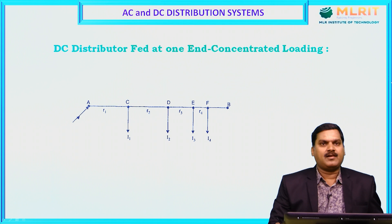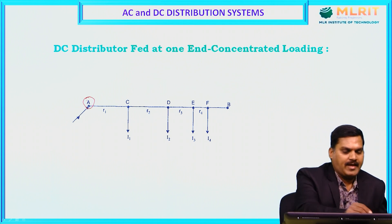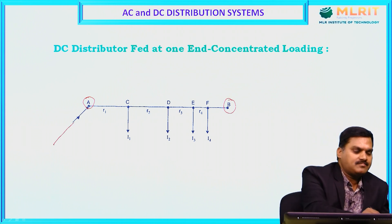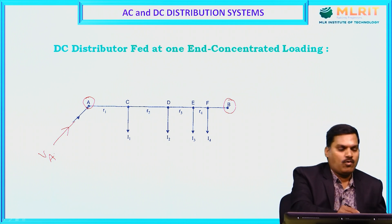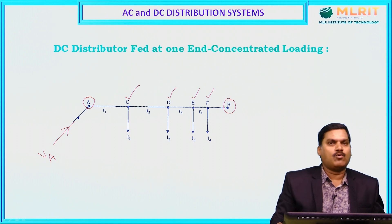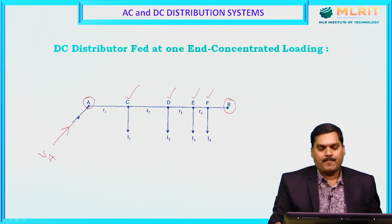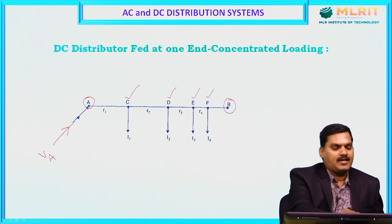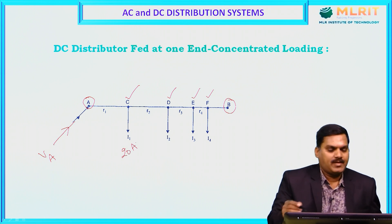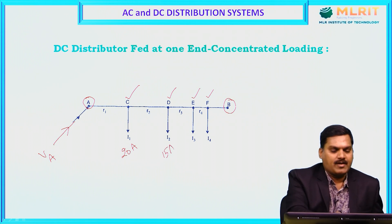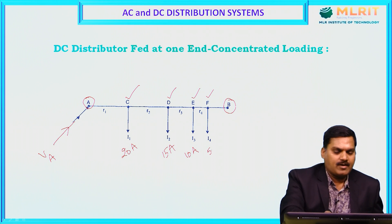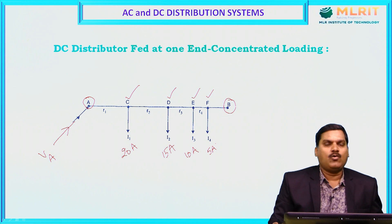First we will consider a DC distributor AB, feeding at one end with some voltage VA, and different loads are connected at C, D, E, F with different distances. A concentrated loading is arranged in this distributor. Suppose 20 amps is drawing at point C, 15 amps at point D, 10 amps at point E, and 5 amps at point F. These are the different loads on this distributor.